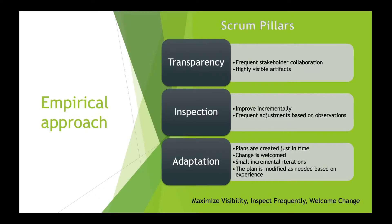In contrast to the predictive waterfall approach, Scrum employs an empirical approach that is more effective in cases where there is more uncertainty. Scrum leverages knowledge gained from observations and experience, modifying the plan as needed. The principles of the Scrum framework are defined in three pillars that support the empirical approach. These pillars are transparency, inspection, and adaptation.